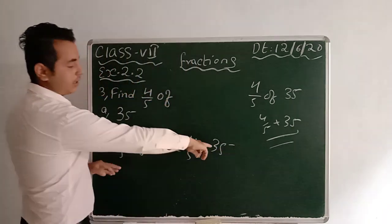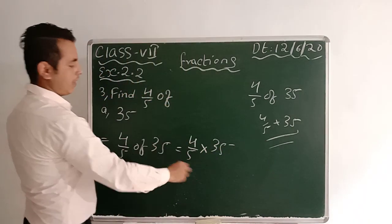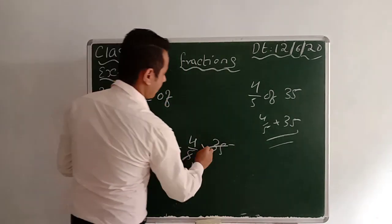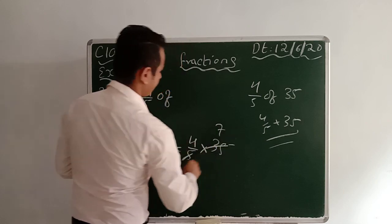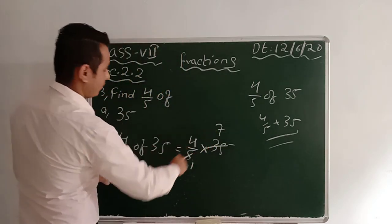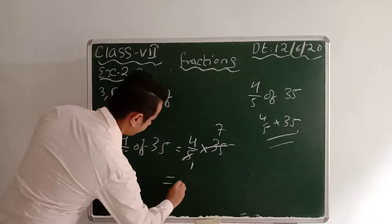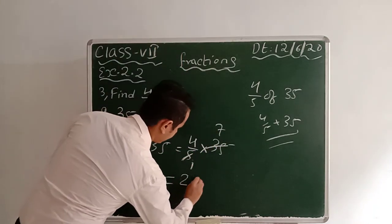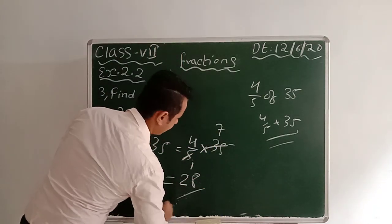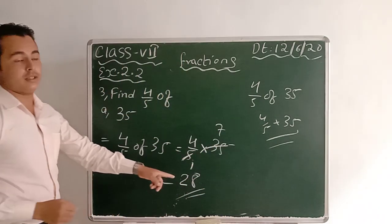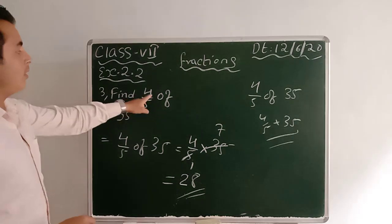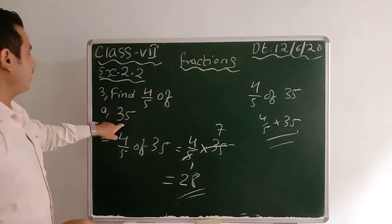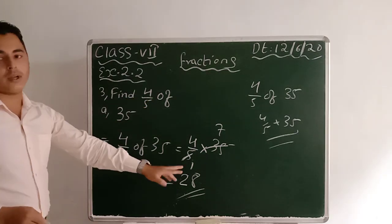Now cut 35 and 5: 5 ones are 5, 5 sevens are 35. Now 7 into 4 gives you 28. So 28 is the answer — 4/5 of 35 means 28.